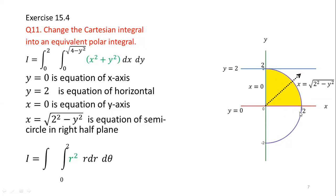For the limits of theta: our region starts at the positive x-axis, where the angle is 0, and ends at the y-axis, which is 90 degrees. In the counterclockwise direction, the angle of the x-axis is 0 and the angle of the y-axis is 90 degrees, i.e., pi over 2 radians. So the limits of theta are 0 to pi/2.